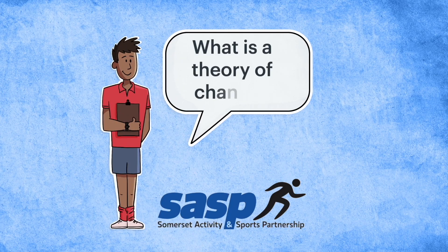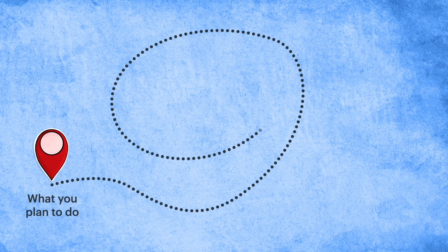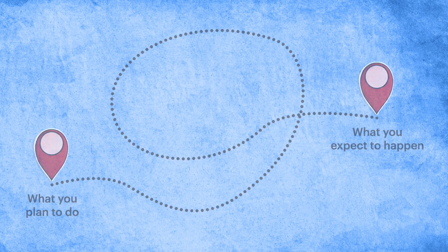What is a theory of change? A theory of change is a visualization showcasing the change you hope to see and why you expect to see it as a result of adopting your chosen policy or program. It joins the dots between something you plan to do and the outcomes you hope to achieve.